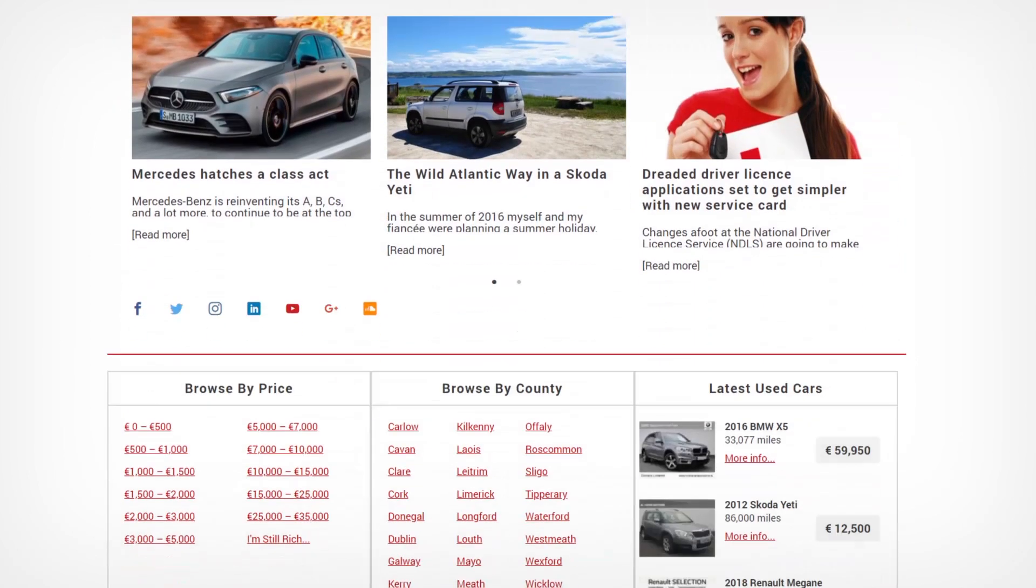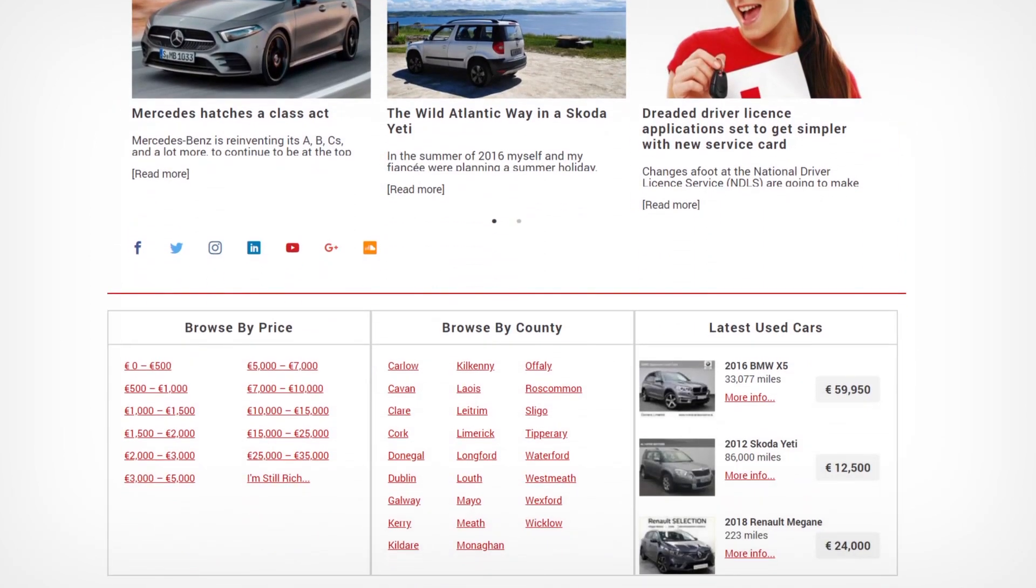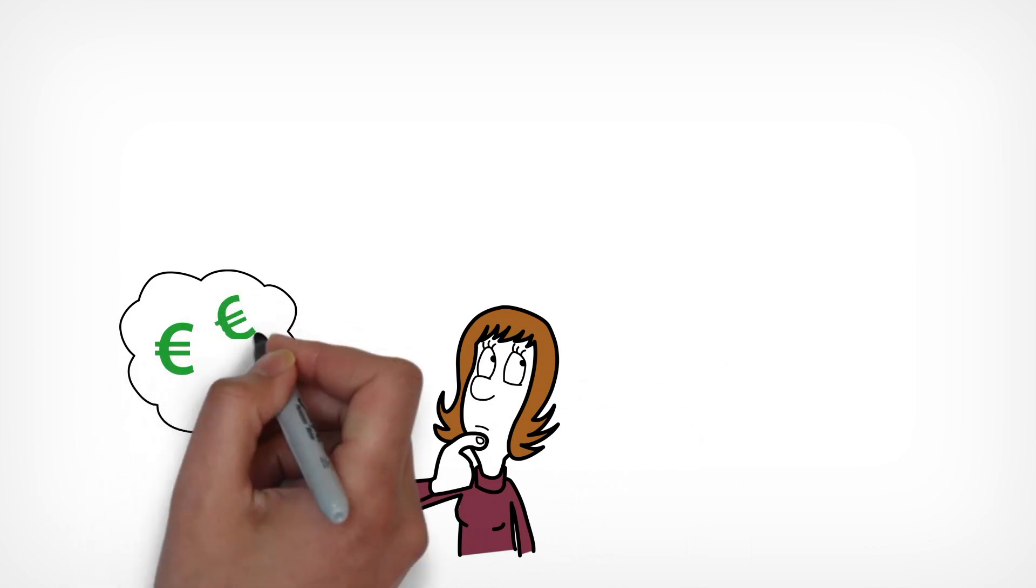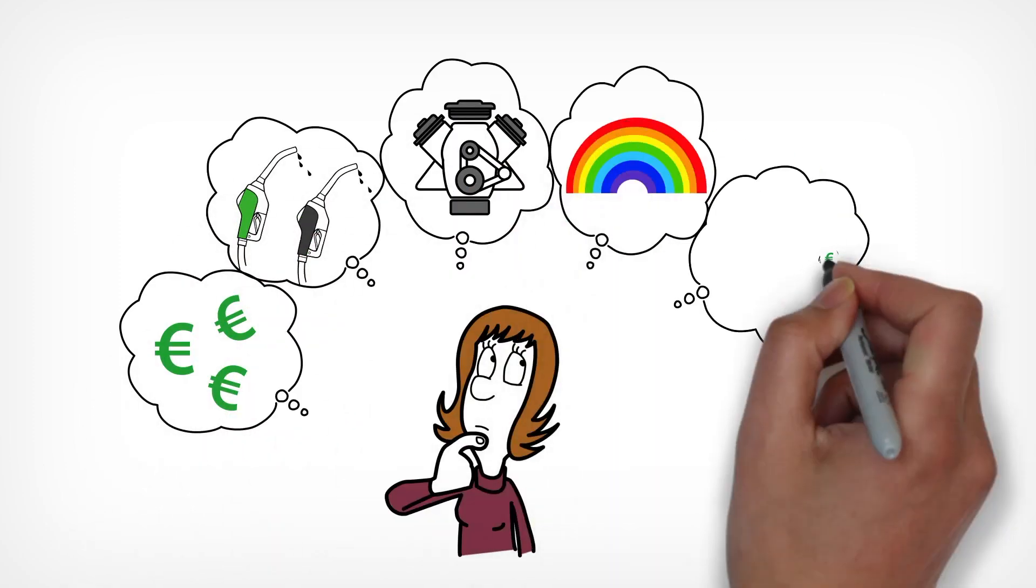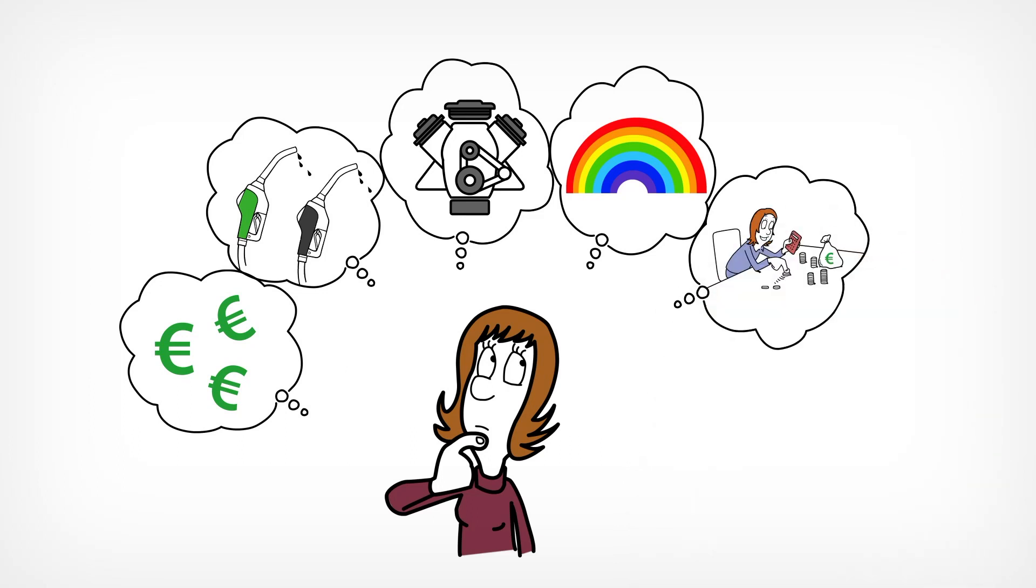With Cars Ireland.ie, Kate can browse over 50,000 cars and search and filter by price, fuel type, engine size, colour, motor tax, and fuel economy, and even apply for finance.